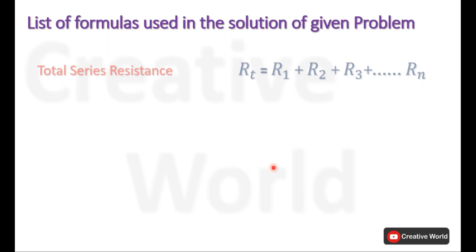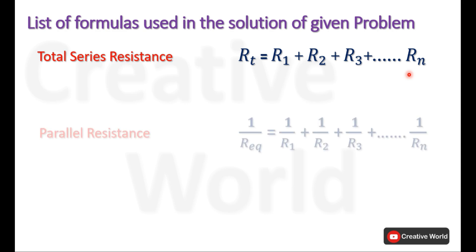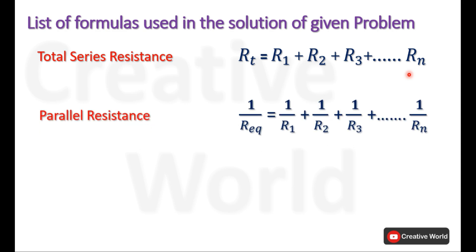While solving this problem, we will be using the total resistance calculation formula for a series network: RT = R1 + R2 + ... + Rn. In simple words, the total resistance of a network is always equal to the sum of all individual resistances connected in that series network. We will also be using the parallel equivalent resistance formula: 1/R_eq = 1/R1 + 1/R2 + ... + 1/Rn.